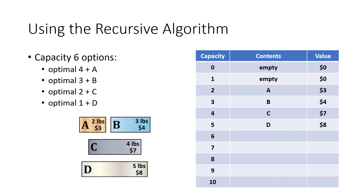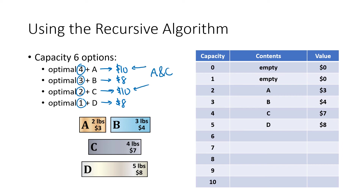For capacity six, the remainders after subtracting each weight are four, three, two, and one. The optimal four-pound knapsack (C) plus A = ten dollars. The optimal three-pound (B) plus B = eight dollars. The optimal two-pound (A) plus C = ten dollars — same as the first option. The optimal one-pound (empty) plus D = eight dollars. The best value is ten dollars: an A and a C.